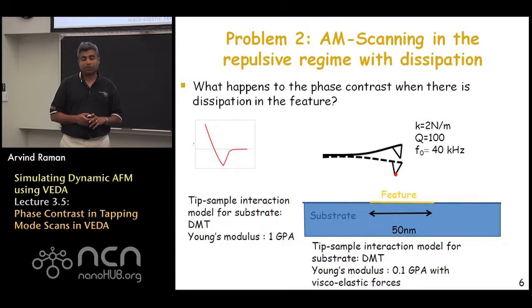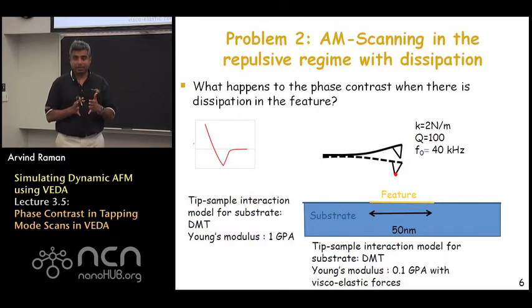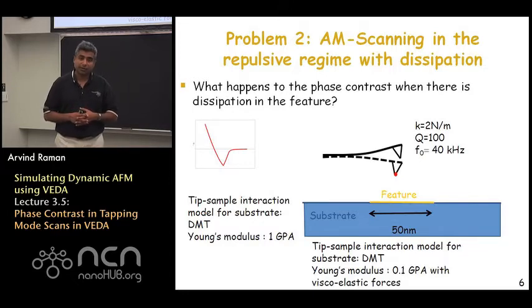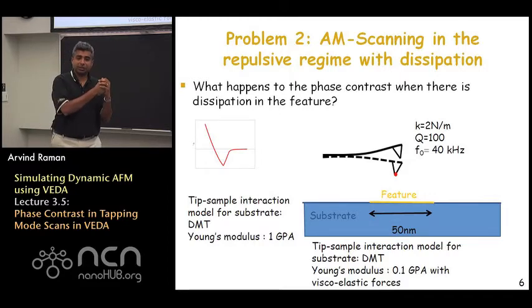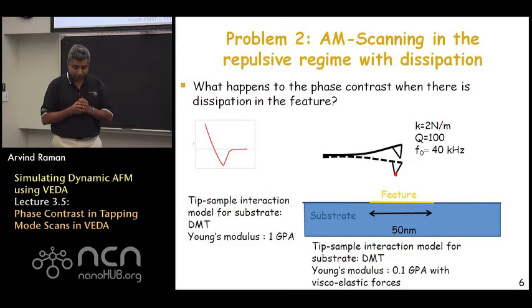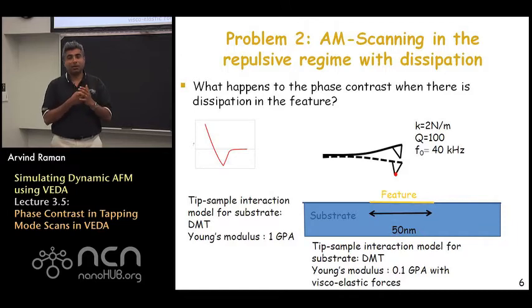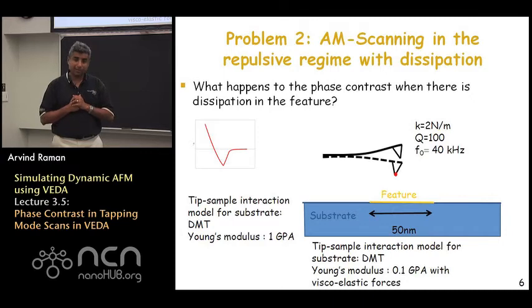In problem two, we take the same problem as before but now allow the feature to have some dissipation. The feature is soft and it has dissipation modeled using Kelvin-Voigt viscoelasticity, which is discussed in the appendix. Basically, as the tip indents there is a viscous dissipation, and as the tip retracts from the sample there is not much dissipation. There is no viscoelasticity involved in the attractive part of the tip-sample interaction in this particular model.